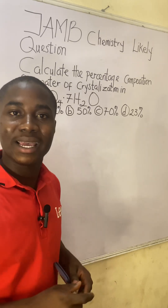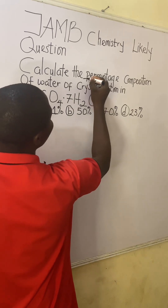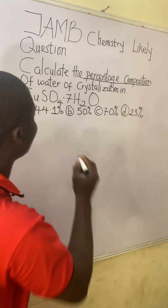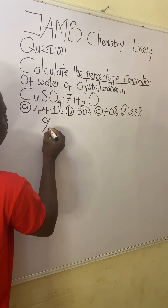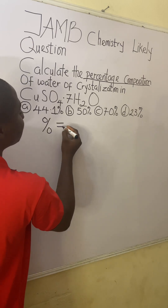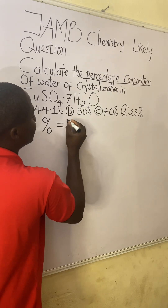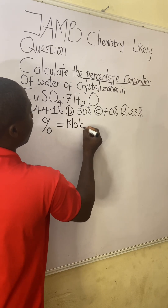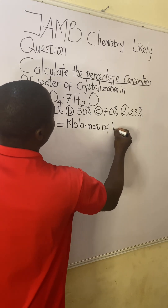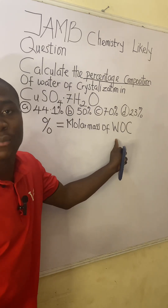This question is from the topic in chemistry called percentage composition, represented by the percent symbol. The formula to solve questions under this topic is: molar mass of the water of crystallization — using that acronym — divided by the molar mass of the full compound.